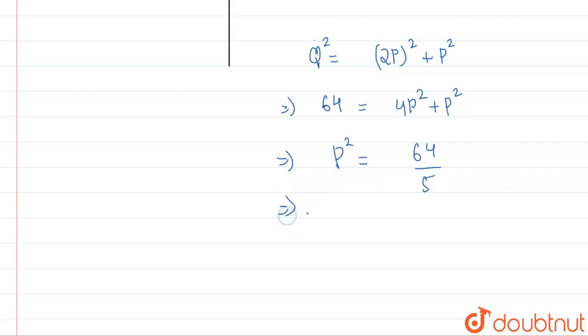And this will come out, if you see, P will be equal to under root 64 by 5. So now what we'll have is the value that is 8 by root 5, or you can also say 8 root 5 by 5.